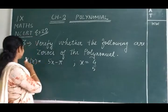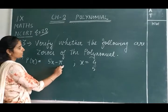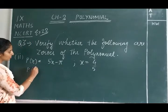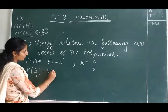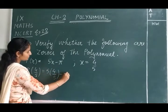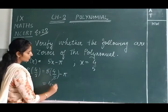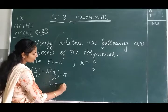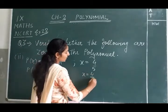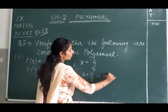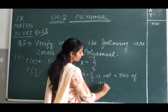For the second part of question 3: p(x) = 5x - 5. We put x = 4/5: p(4/5) = 5(4/5) - 5. The 5 cancels and we get 4 - 5 = -1. This value is not equal to 0, so x = 4/5 is not a zero of the given polynomial.